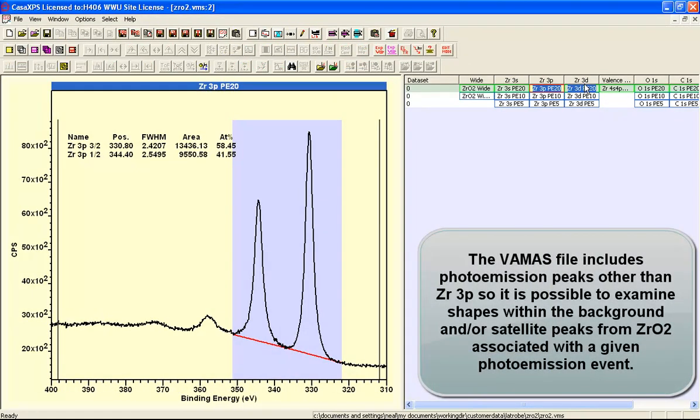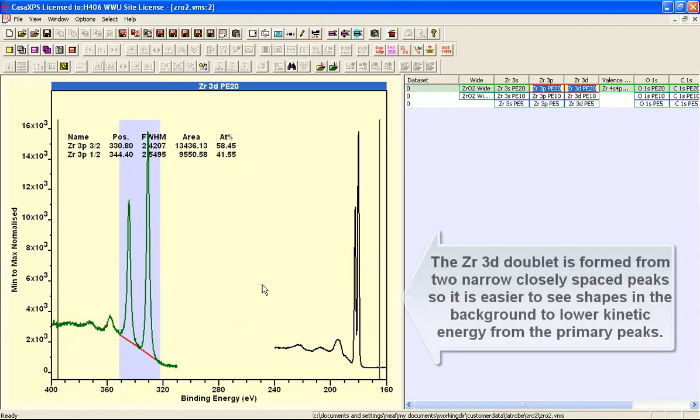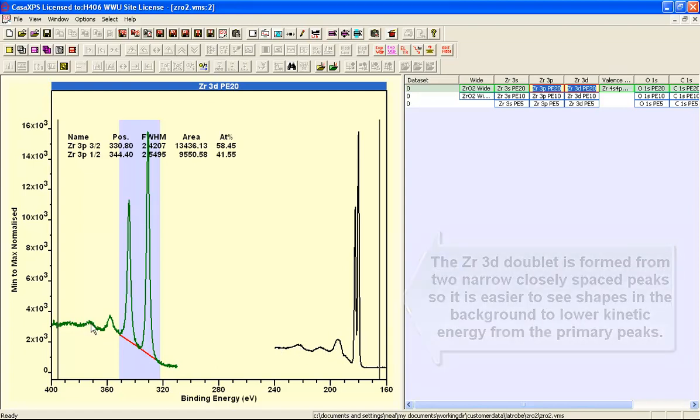If we look at the zirconium 3D and overlay these two together we've got two different photoemission lines. The 3D has produced a doublet also but they're very close together and they're narrow peaks. However you can see because of the narrowness of these peaks that there is significant structure in the background and we also see a similar structure here.